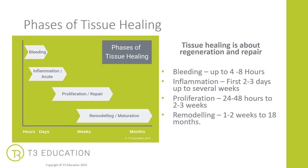Phases of tissue healing. Tissue healing is all about regeneration and repair. During this process, there are four main phases or stages that your patients will need to go through to heal after an injury. The timeframe for these aren't textbook and will vary depending on many factors, such as how well their tissues heal and the severity of the injury, but it gives you an idea of where your client or patient may be along this spectrum.